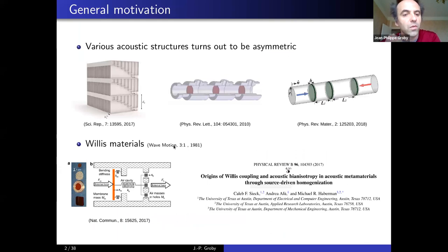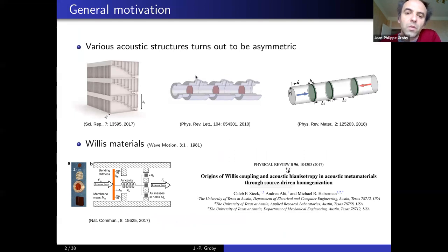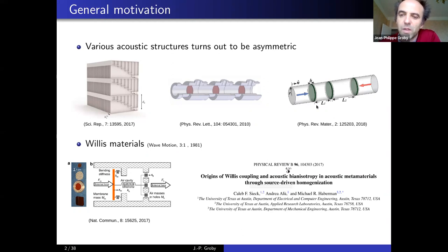The rationale behind this talk is the following: in acoustics there are several structures which turn out to be asymmetric. For example, structures used to achieve perfect absorption in transmission problems are composed of detuned resonator elements along the depth of the structure. Another structure, quite famous for evidencing negative refraction, has a unit cell composed of a plate and a hole — completely asymmetric.